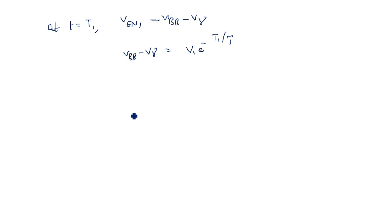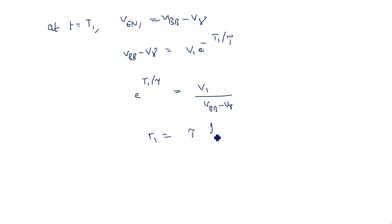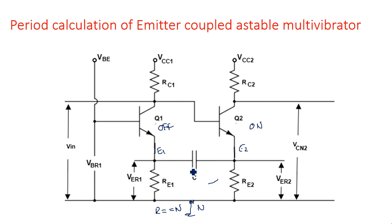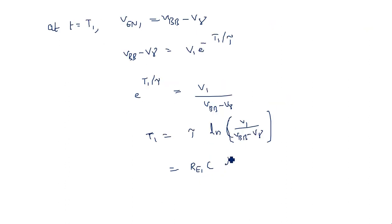From this we calculate T1. Rearranging: e to the power of T1 over tau equals V1 divided by (VBB minus V-gamma), so T1 equals tau times ln of V1 over (VBB minus V-gamma). Here tau equals Re1 times C, since capacitor charging and discharging occurs through this path. Therefore T1 equals Re1 times C times ln of V1 over (VBB minus V-gamma).